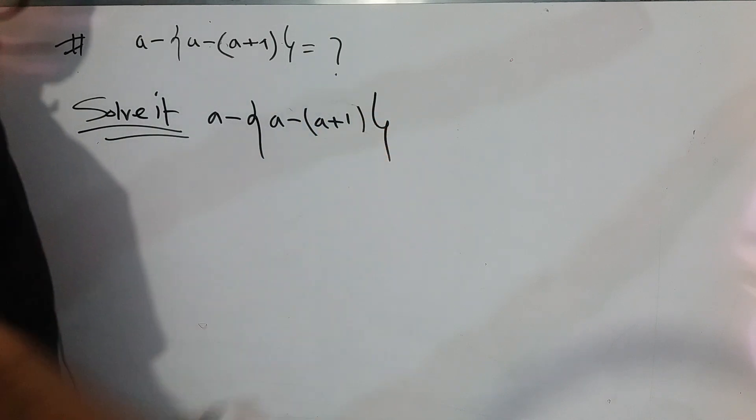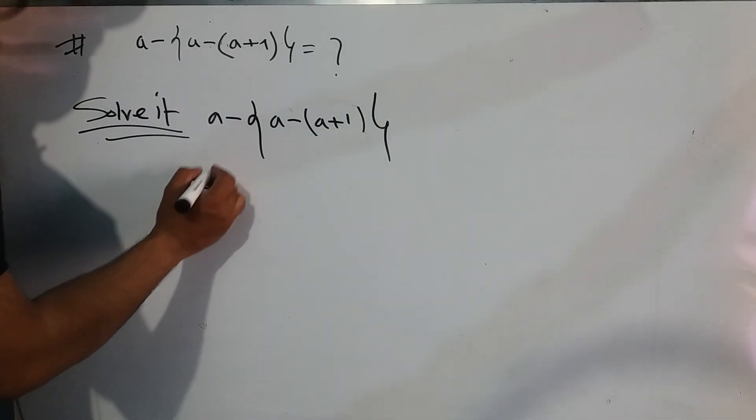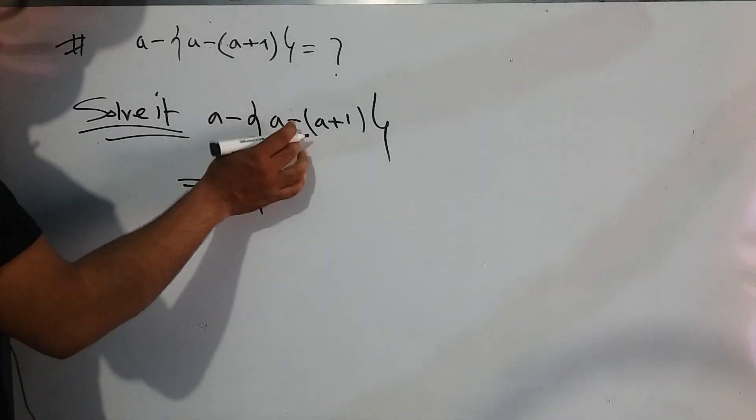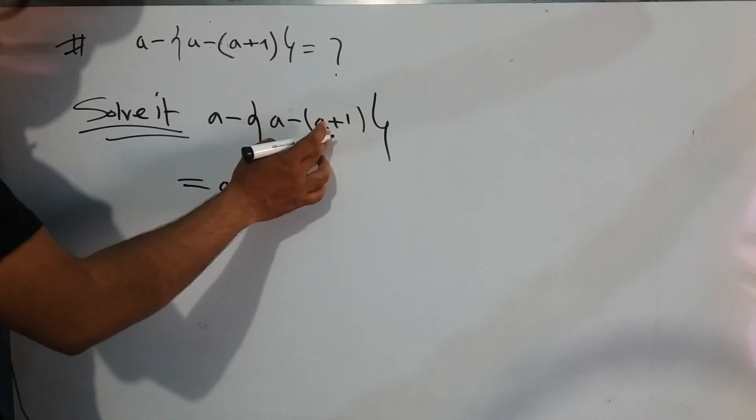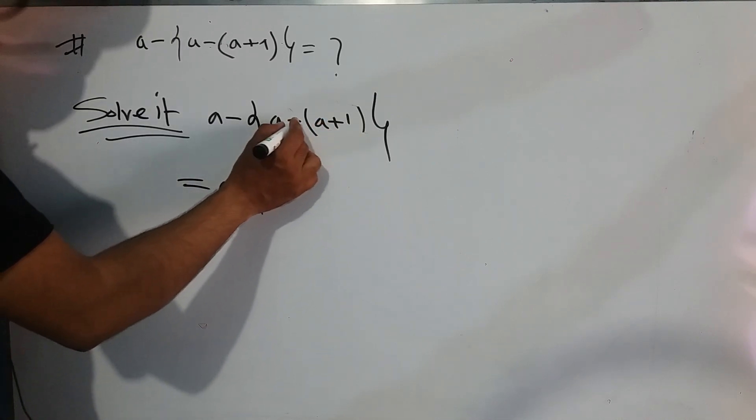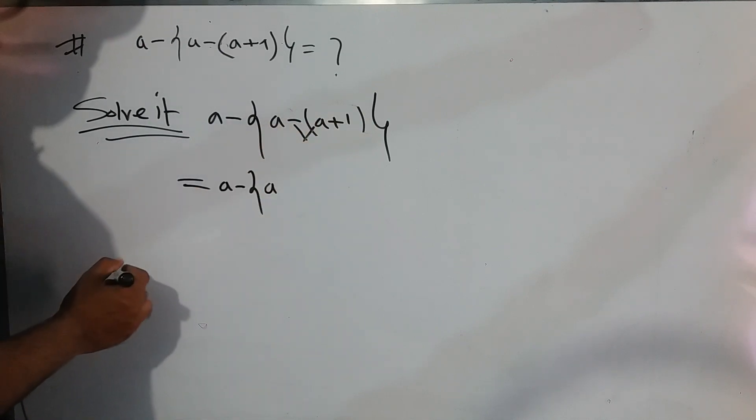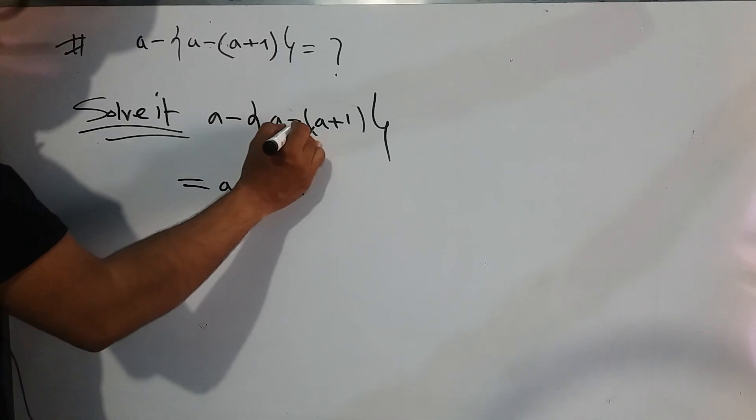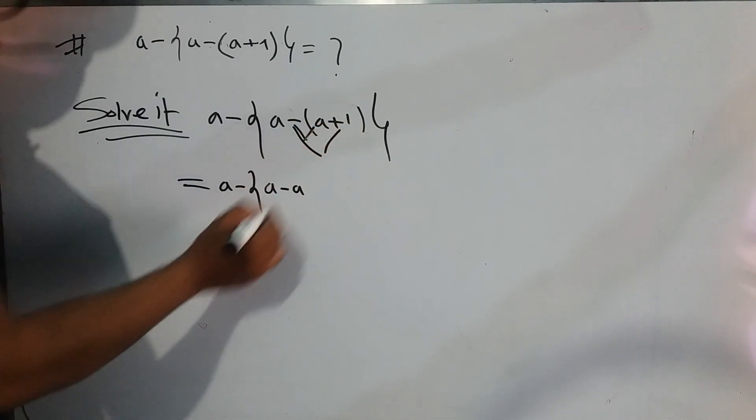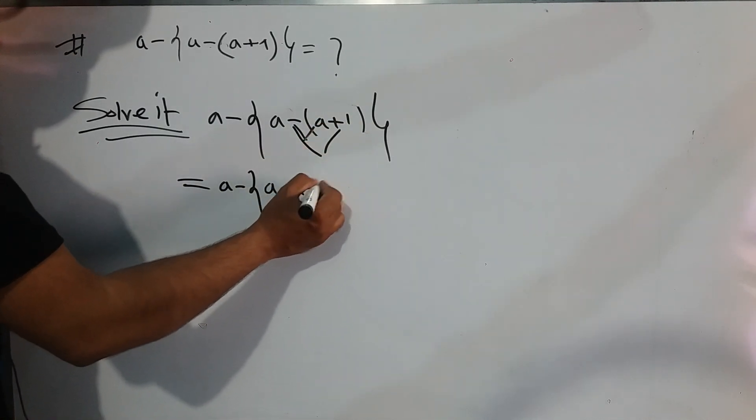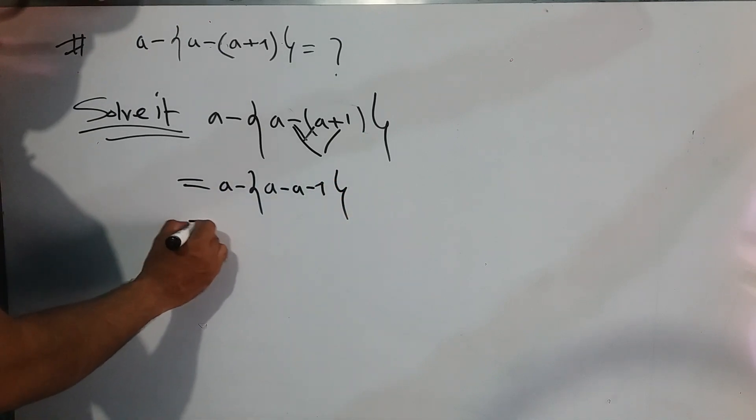Right now we can write down a minus second bracket and we are calculating here. A and a, first time we can write down a, and minus and plus a equal to minus a, and minus, and plus one we can write down minus one, and second bracket close.